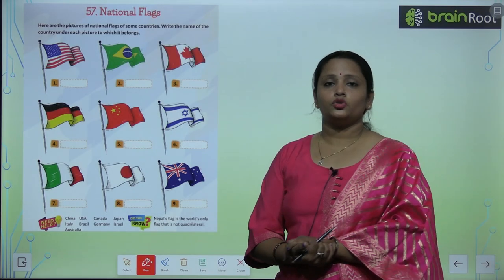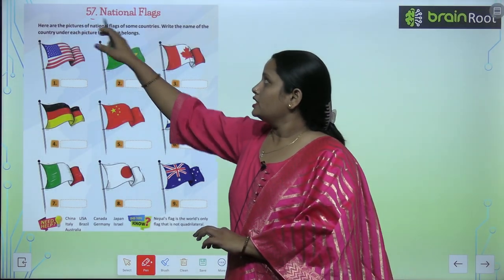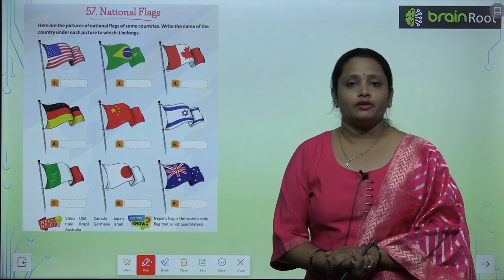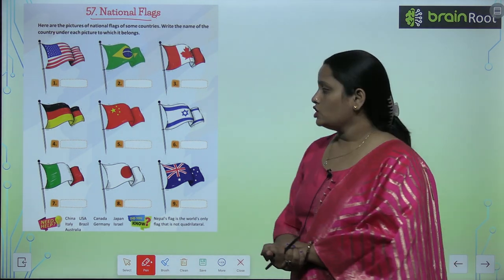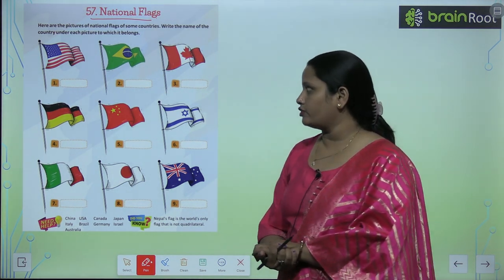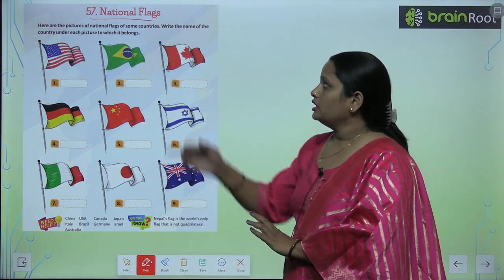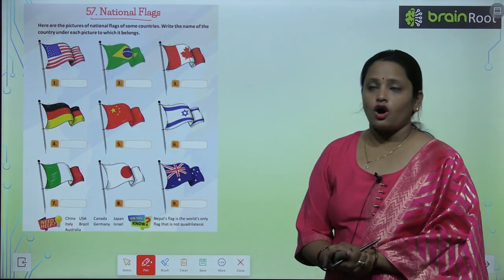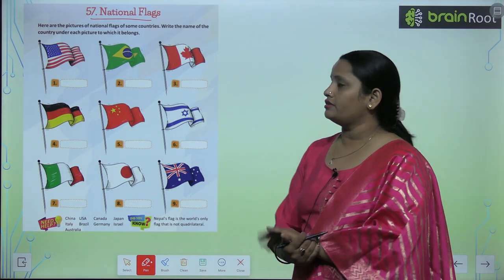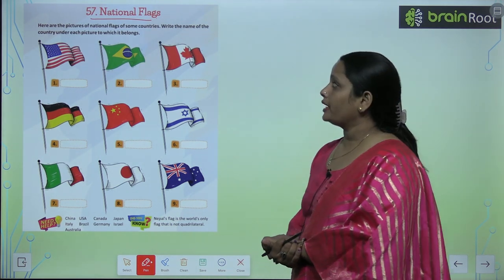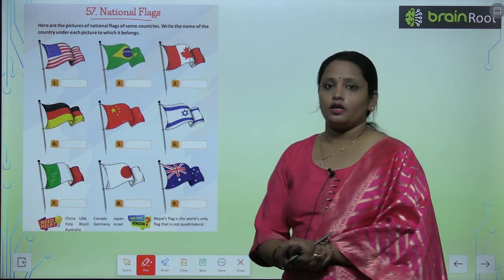So children, let's do the next chapter, which is chapter number 57, and the name is National Flags. Here you can see the national flags of different countries. Here are the pictures of national flags of some countries. Write the name of the country under each picture to which it belongs.